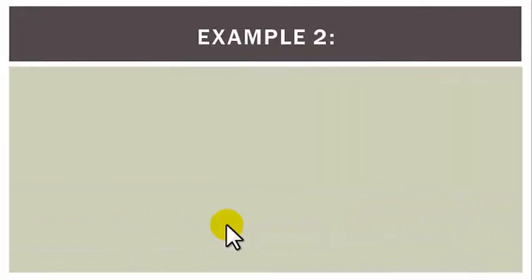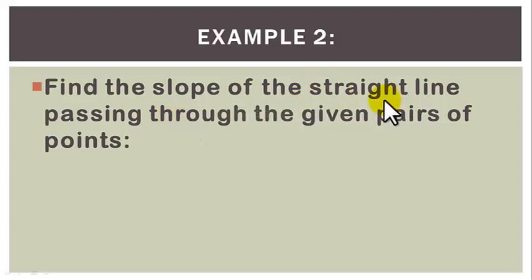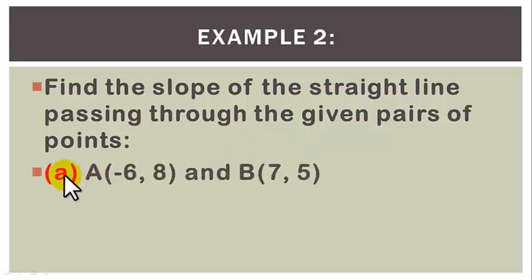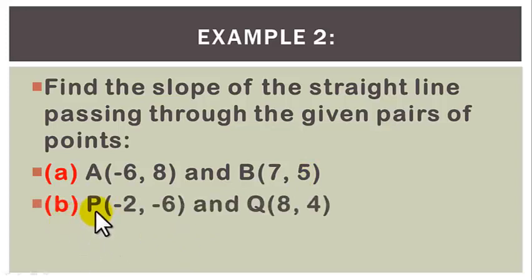Example 2: Find the slope of the straight line passing through the given pairs of points. A. Point A with coordinate (minus 6, 8) and B with coordinate (7, 5). B. Point P with coordinate (minus 2, minus 6) and Q with coordinate (8, 4).